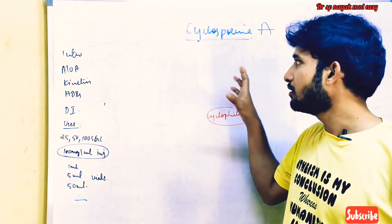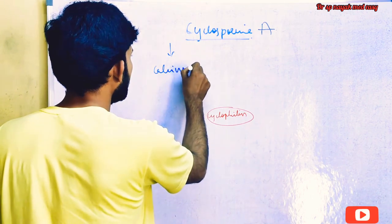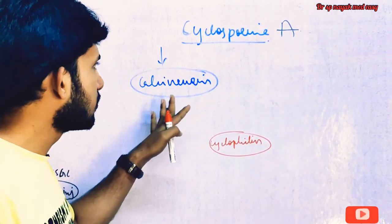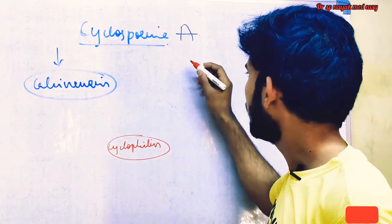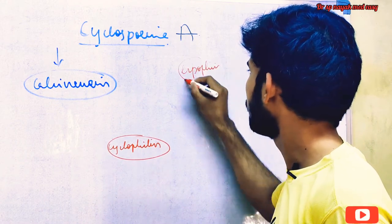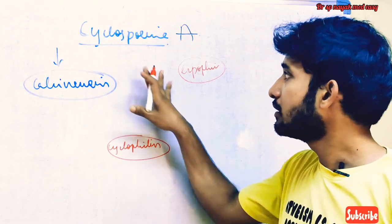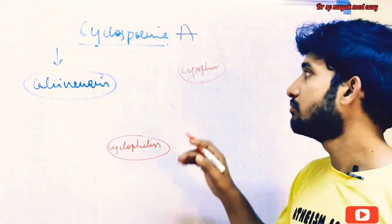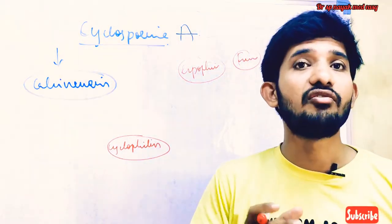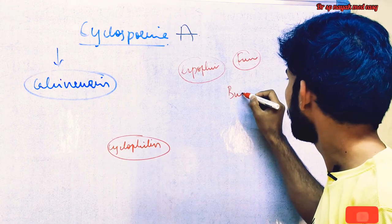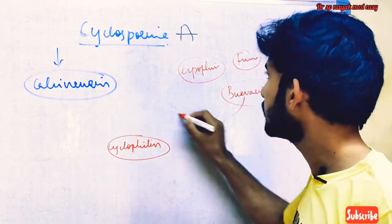Cyclosporine is one example of the immunosuppressants and comes under the class of calcineurin inhibitors. Cyclosporine is a highly lipophilic drug — this is a very important point. It is obtained from the Tolypocladium class of fungus, and most of the time it is obtained from Beauveria nivea, which is one of the fungi from which cyclosporine is derived.